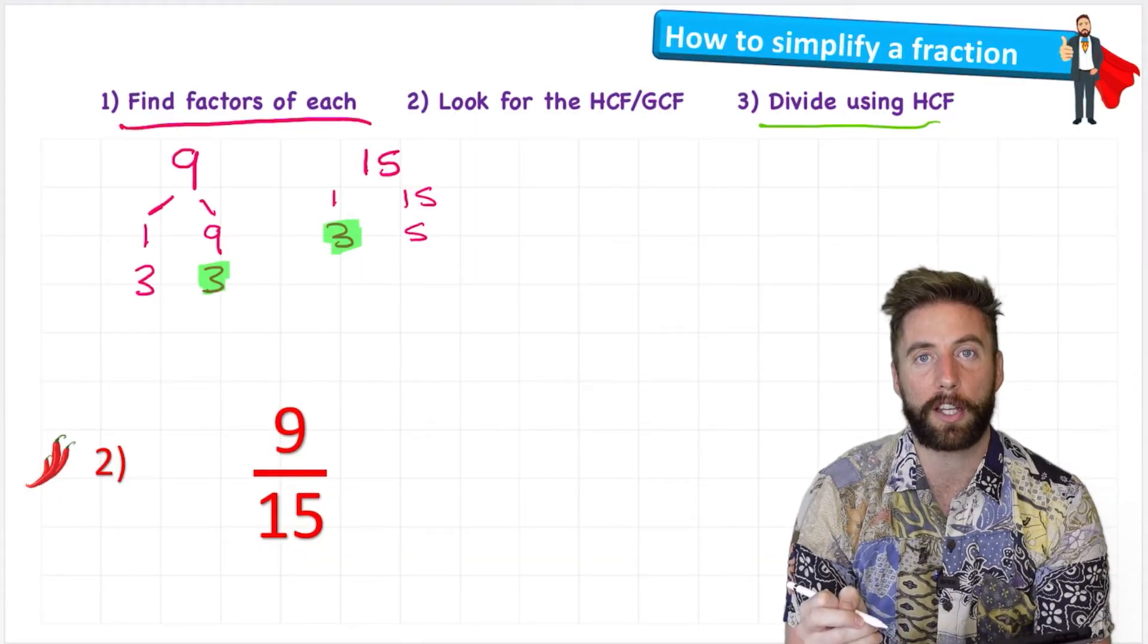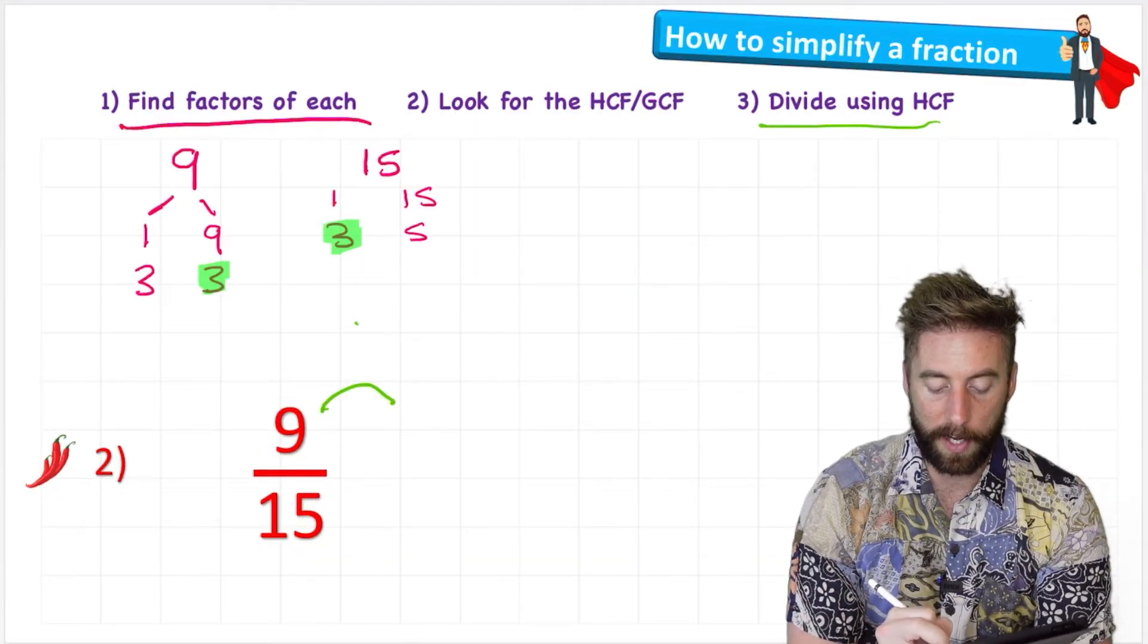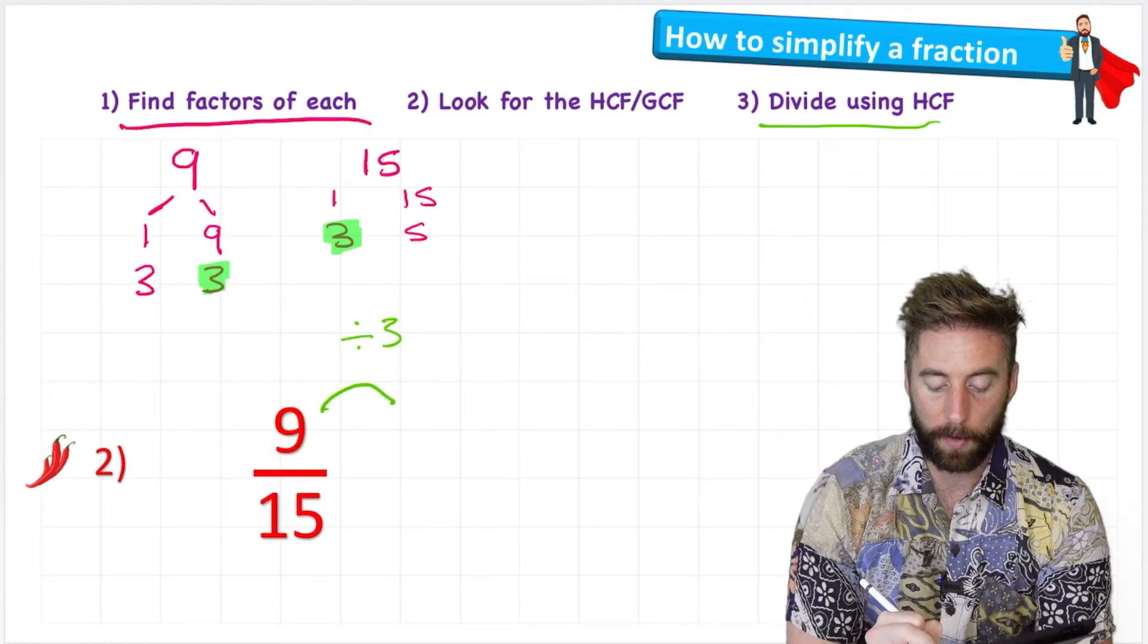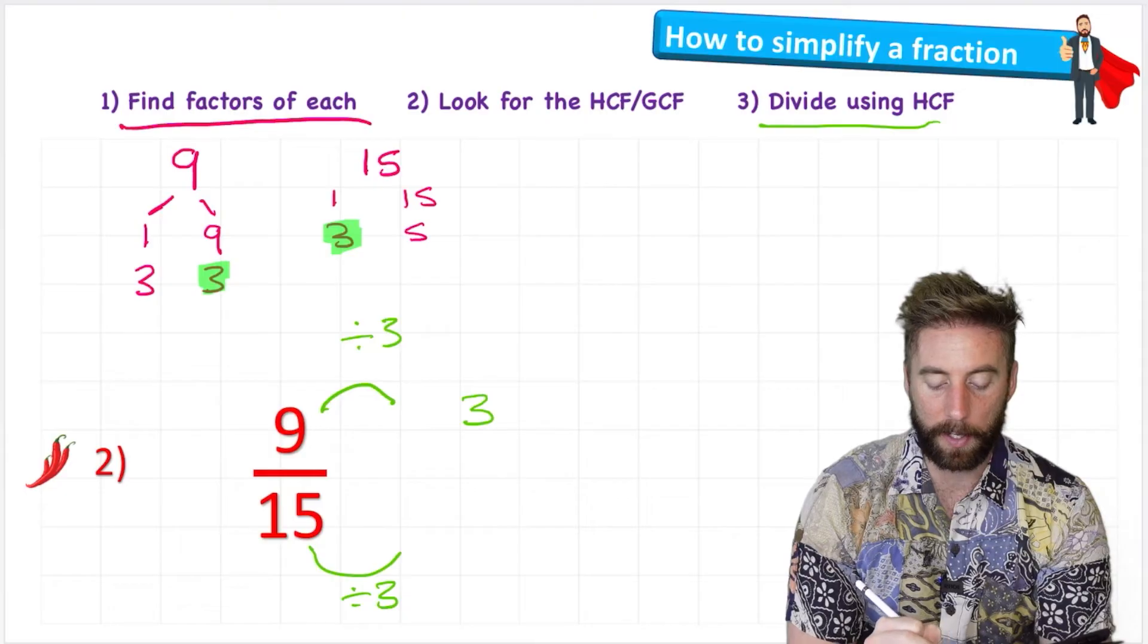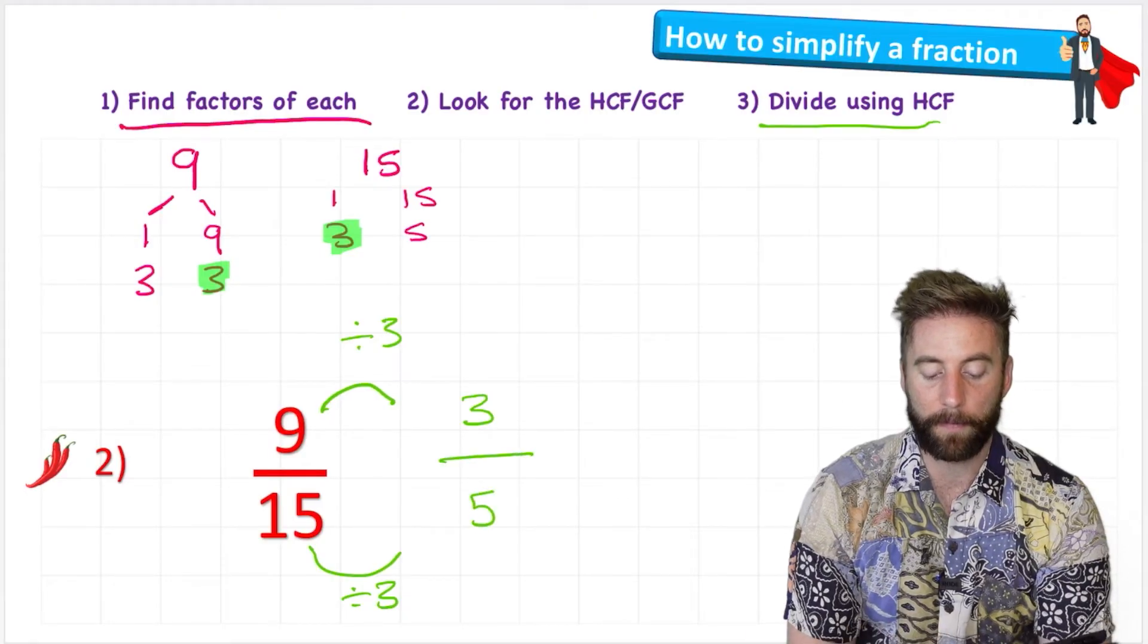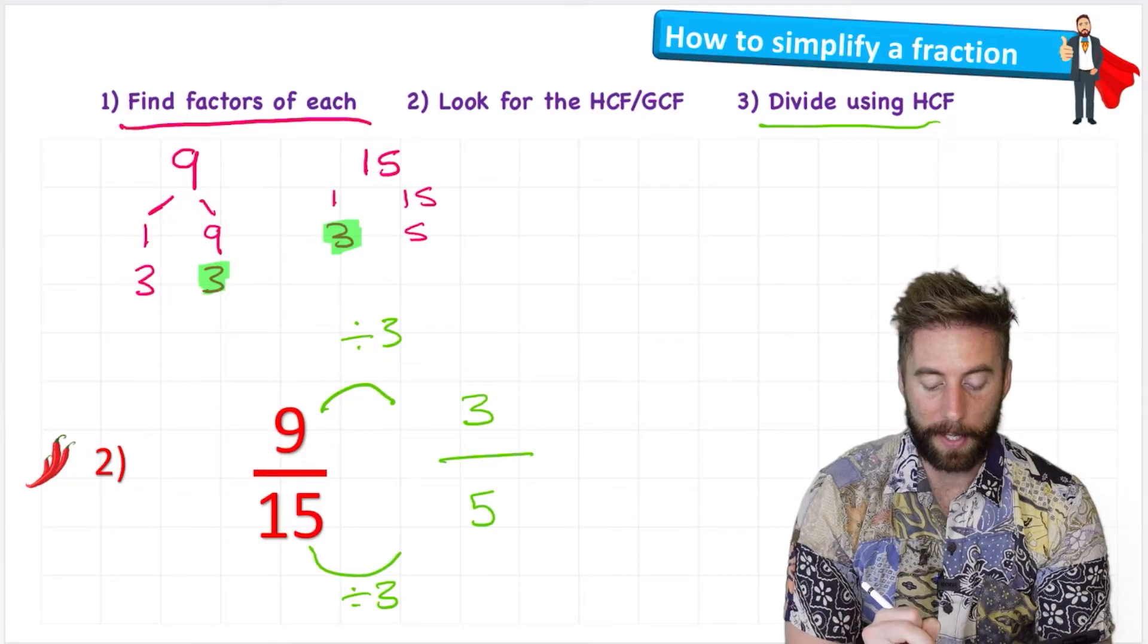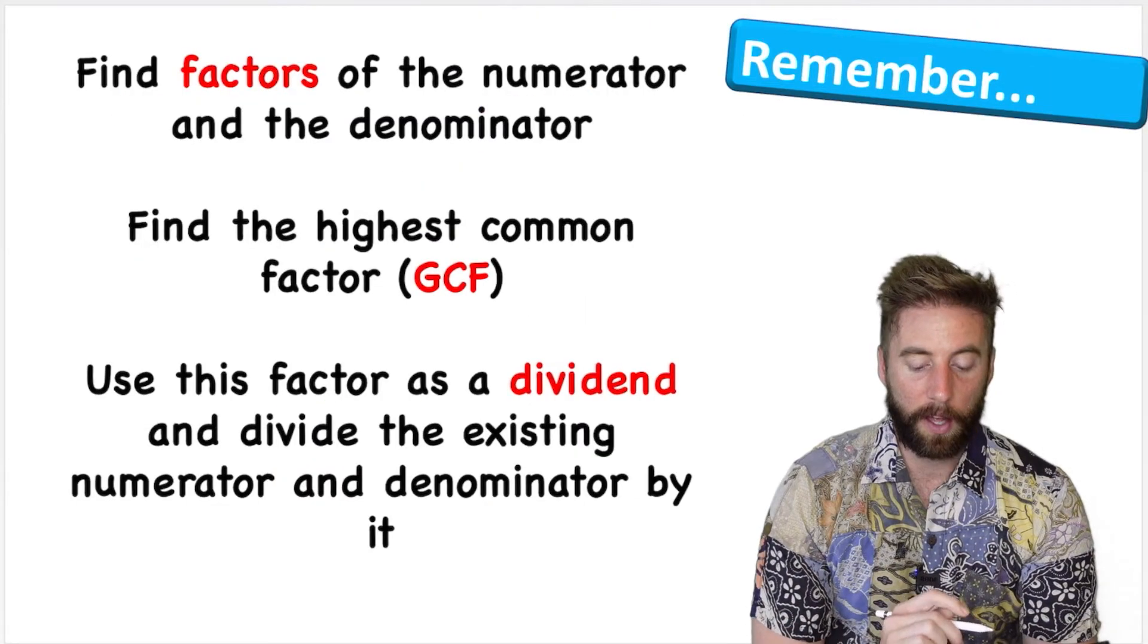So step three said to divide using our highest common factor. So I'll do nine divided by three, which is three, and fifteen divided by three, which is five. So our simplified fraction in our simplest form is three fifths.